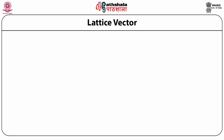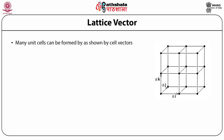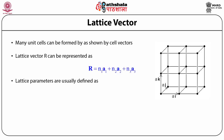Lattice vectors. Many unit cells can be formed as shown by the cell vectors. The lattice vector R can be represented as R = N1·A1 + N2·A2 + N3·A3. The lattice parameters are usually defined by the translations A, B, C in directions X, Y and Z, and the angles alpha, beta and gamma which are made by the corresponding axes.